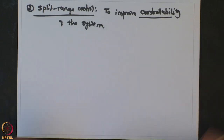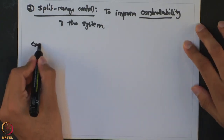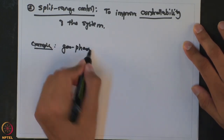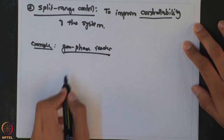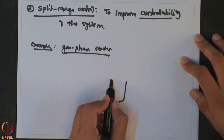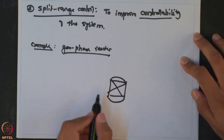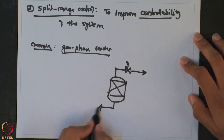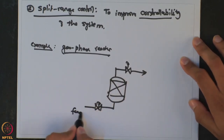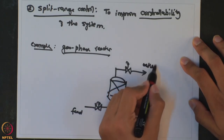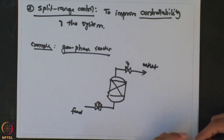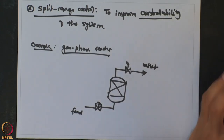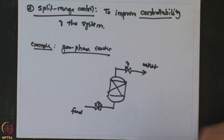Let me explain that with an example. Let us consider a gas phase reactor. This is the outlet and this is the inlet. As it is a gas phase system, in order to control the inventory of this reactor, we would have to control the pressure. So one of the controlled variables is pressure.